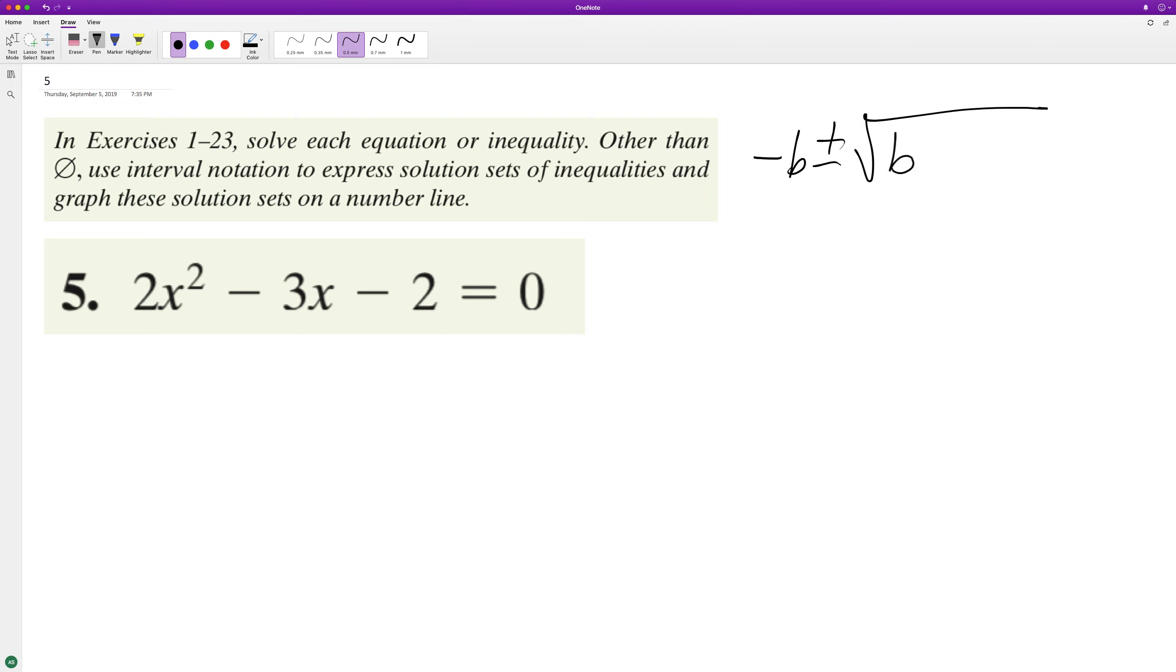All right, so then we'll end up with negative negative 3, plus or minus the square root of b squared, which is negative 3 squared, minus 4 times a, which is 2, times c, which is negative 2.